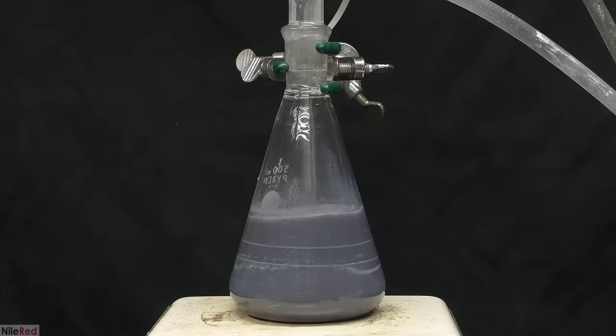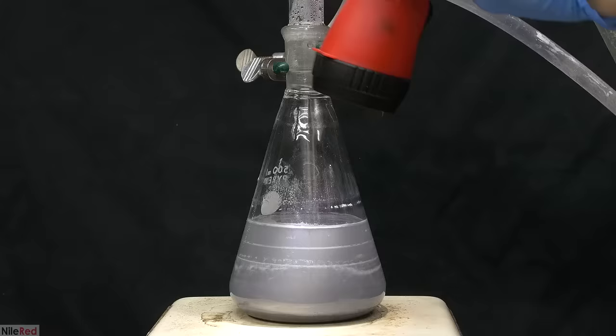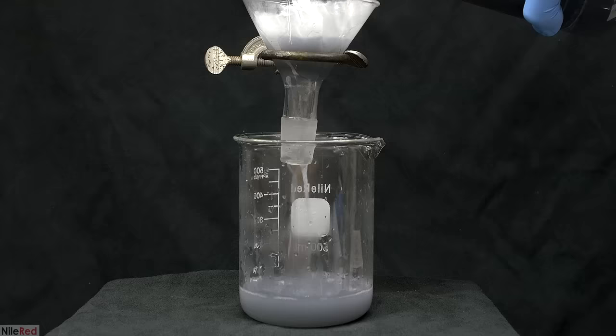I turn off the stirring and the heating, and the particulate quickly sinks to the bottom. I think this is mostly just finely divided lead powder, but I'm not exactly sure why it's not reacting. Anyway, regardless of what it is, it needs to be filtered off, but unfortunately, this can be a little annoying.